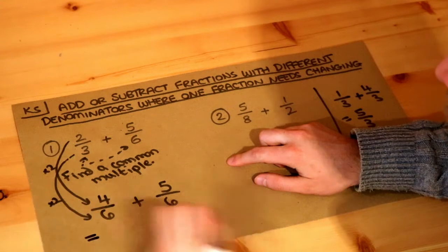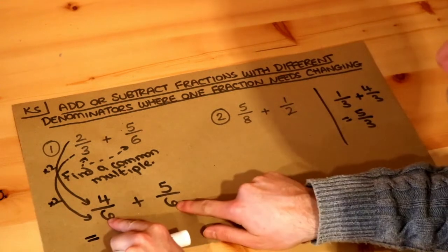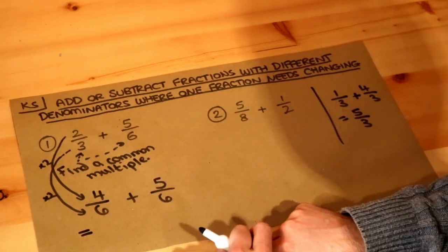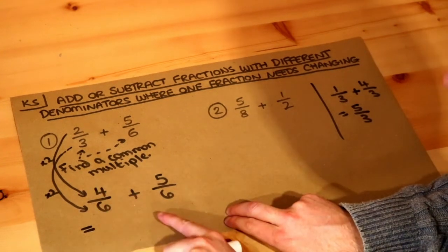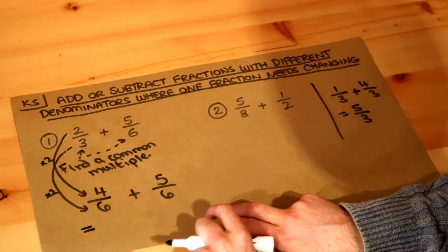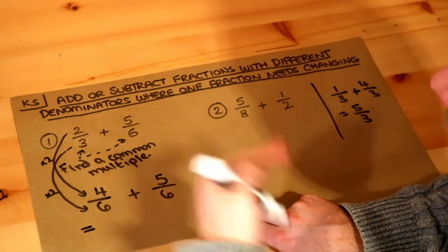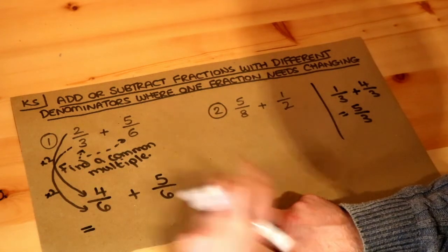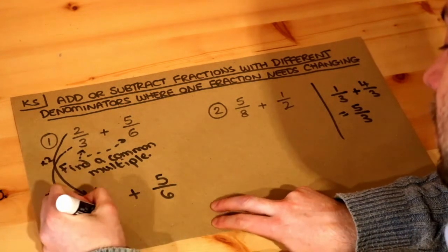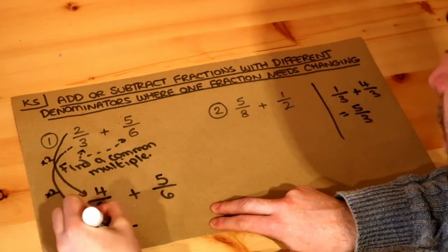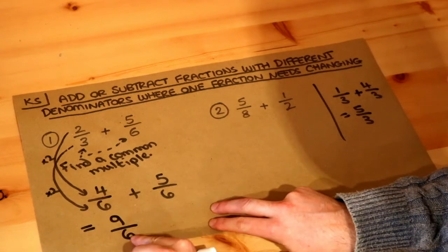And now we've got two fractions with the same denominator. That's great because it makes it much easier. So we've got four sixths of something and we add five sixths of something. How many sixths in total do we have? Well four plus five sixths is nine sixths. So four plus five is nine and the denominator stays the same.